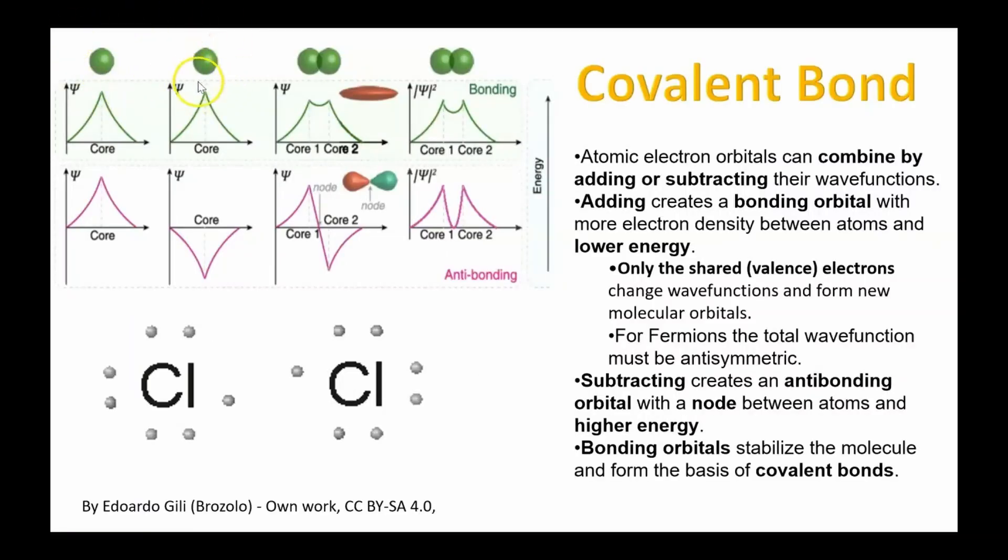Imagine two atoms, each with one valence s-electron. Their atomic wave functions can combine by adding or subtracting, and both combinations still solve the Schrodinger equation. Adding the wave functions forms a bonding orbital. In a bonding orbital, the electron probability is highest between the two positive nuclei, holding them together like an adhesive. This is what a covalent bond is.